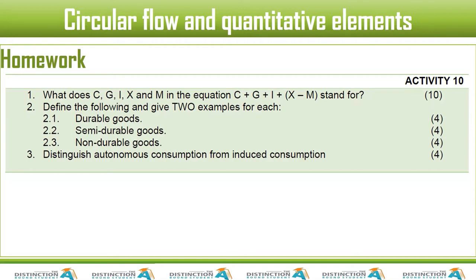Define the following terms and give two examples for each. Durable goods are goods that can be used for a long time — for example, a car, a bus, a train. Semi-durable goods are goods that can be used more than once, but not for a very prolonged period of time.